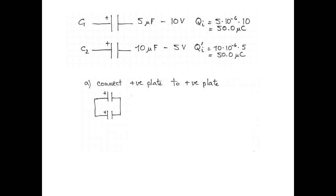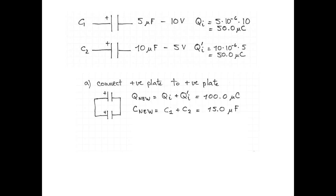What happens when the capacitors are reconnected positive plate to positive plate? The new charge will be the sum of the two charges on the capacitors, so 100 microcoulombs. When they're reconnected, the two capacitors are connected to the same points — that makes them in parallel, so the new capacitance is the sum of our two capacitors: 15 microfarads.